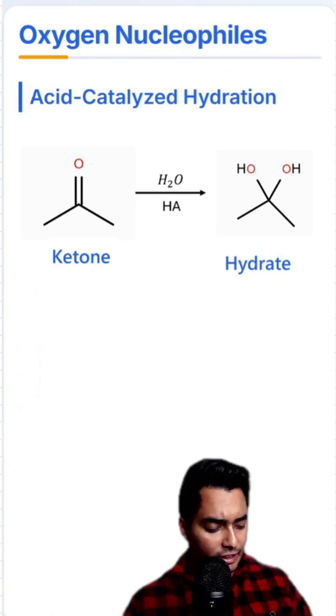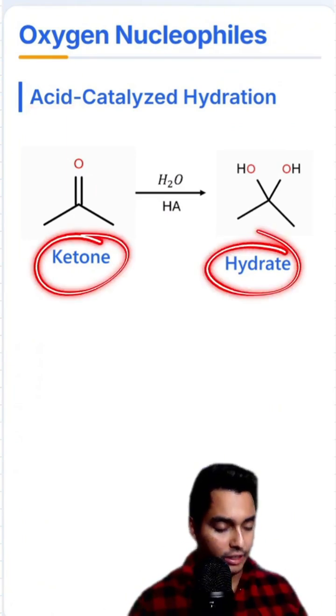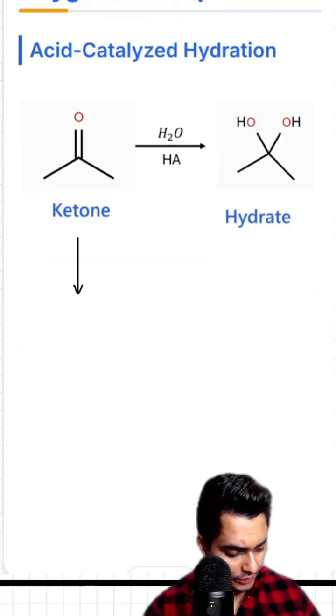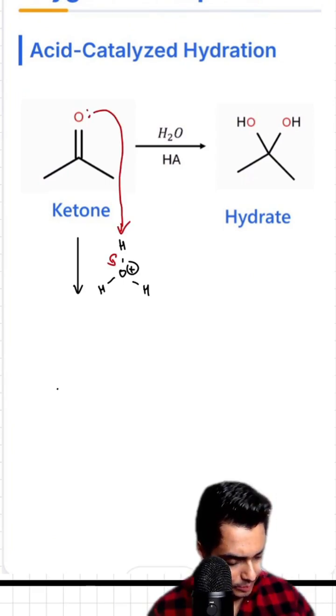Now for acid-catalyzed hydration, it's the same idea where we start with a ketone and end with a hydrate, but this time we're reacting with acid instead of base. An acid here is going to generate hydronium, and then I'm going to protonate this oxygen, thereby generating this intermediate.